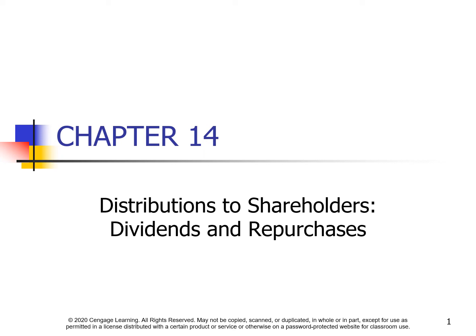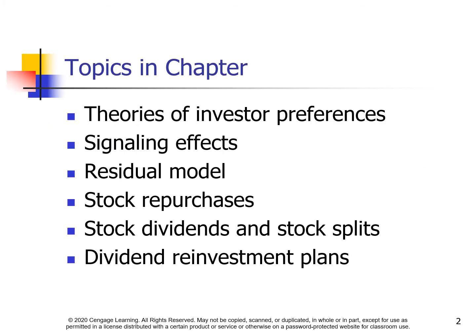Chapter 14: Distributions to Shareholders — Dividends and Repurchases. Topics in this chapter include theories of investor preference, signaling effects, the residual model, stock repurchases, stock dividends and stock splits, and dividend reinvestment plans.